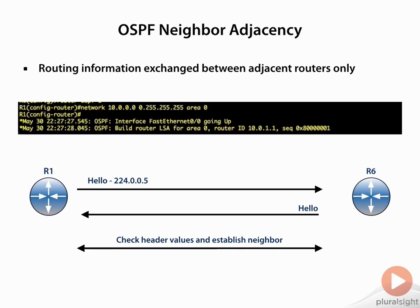Once it established the neighbor, it was then able to build its link state database, and then run the SPF algorithm against that database, placing itself as the root of the tree, and is able to calculate the best path to each destination and put a route into the routing table.